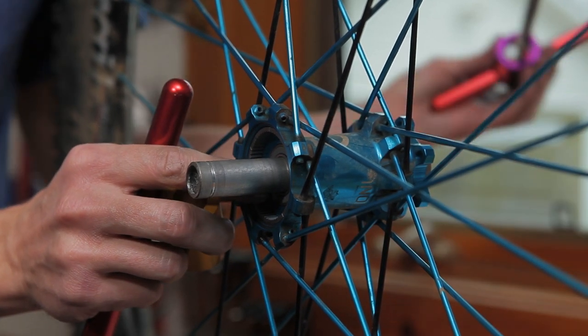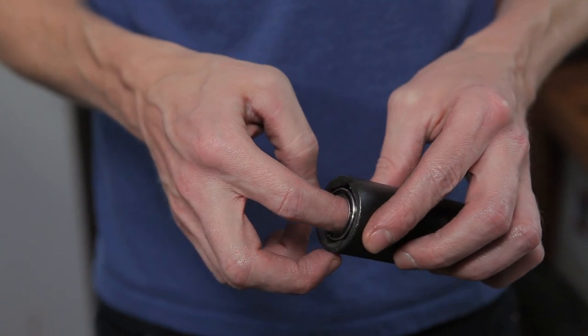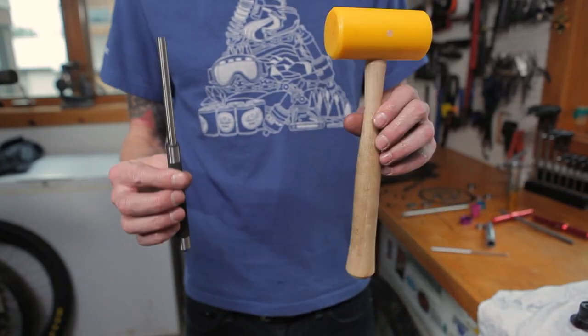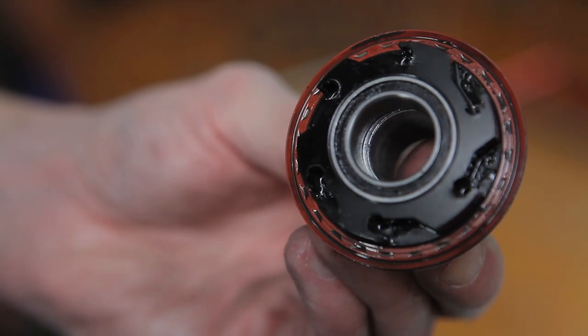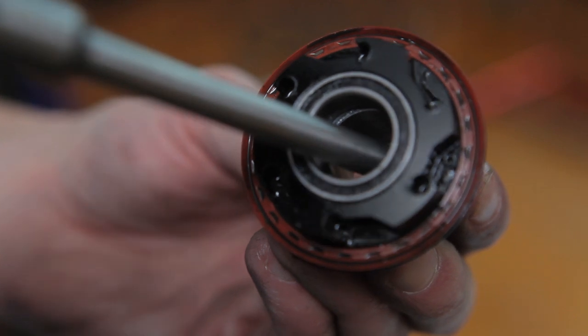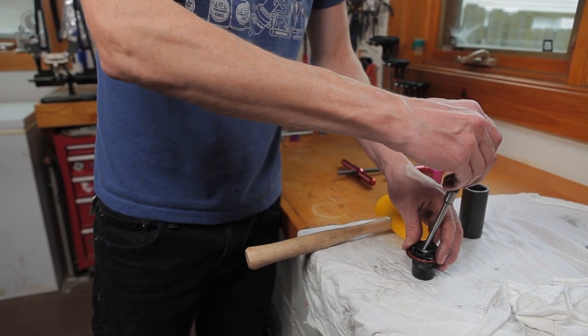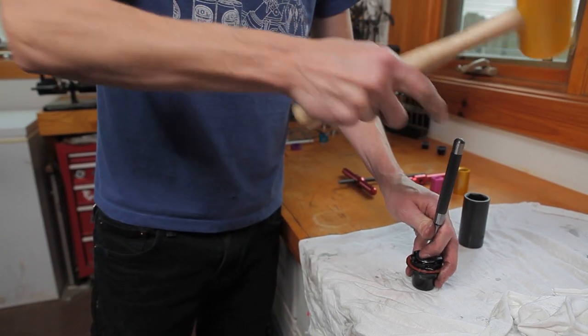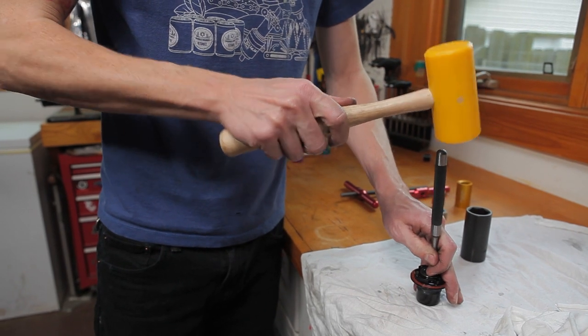For freehub bearing removal, a large socket can come in handy. Be sure the inside of the socket is wider than the actual bearing. You'll need your mallet and a punch. Start with the outboard bearing on the driver body. Use your punch to move the freehub spacer to reveal the edge of the bearing. Tapping gently, work your way around the bearing to press it out as evenly as possible.